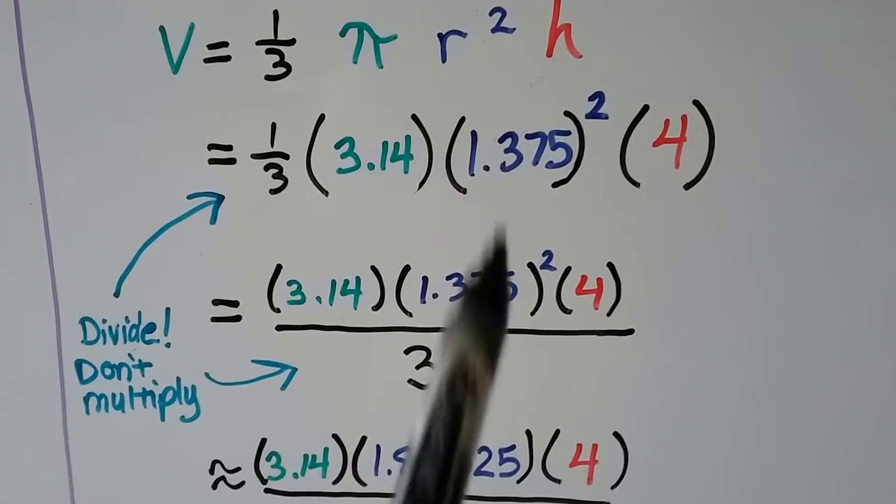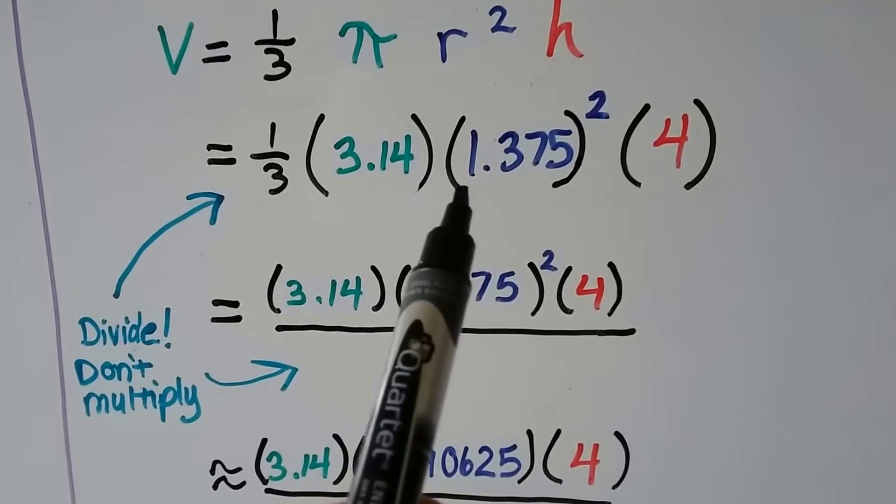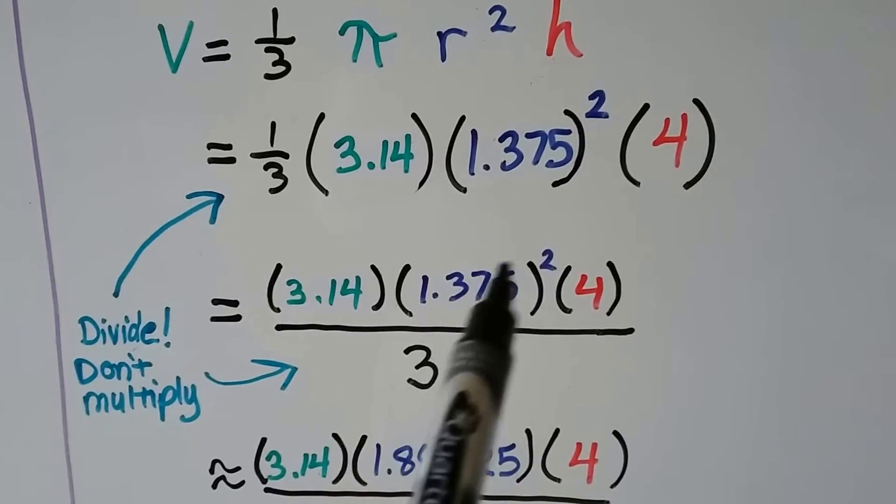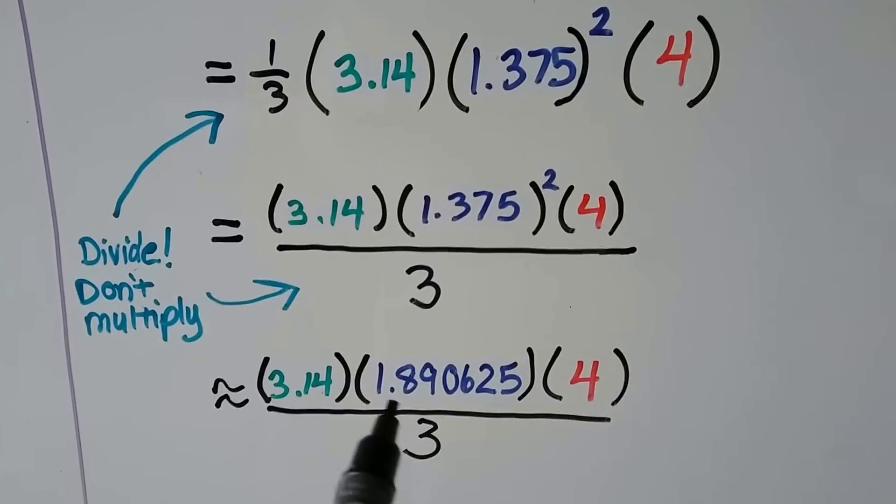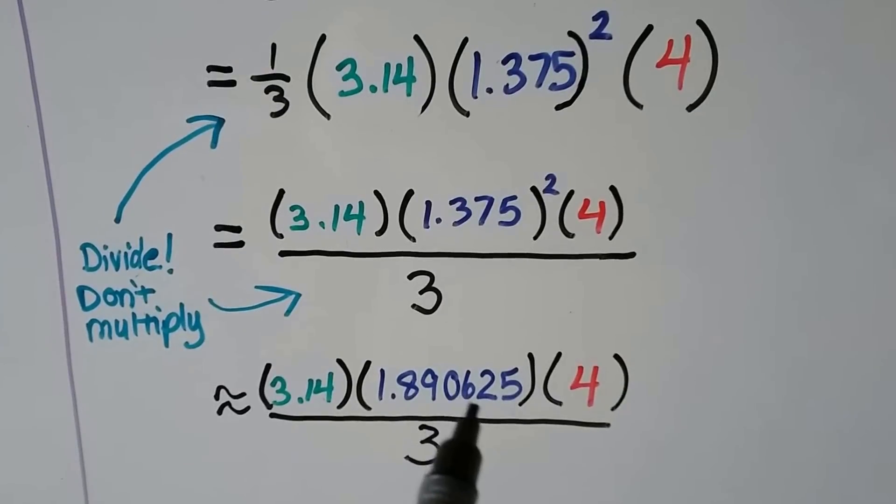So let's do this part, the radius. We need to do 1.375 times 1.375. We get 1.890625.